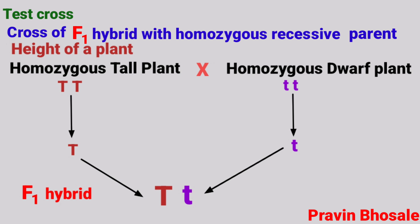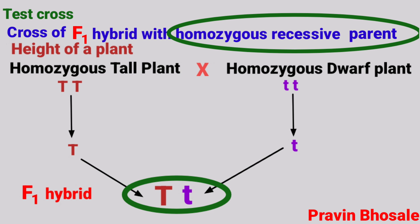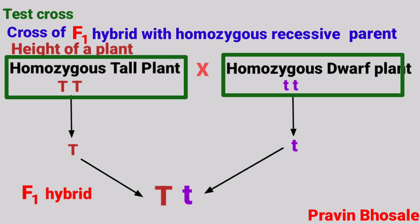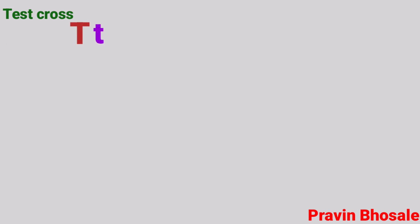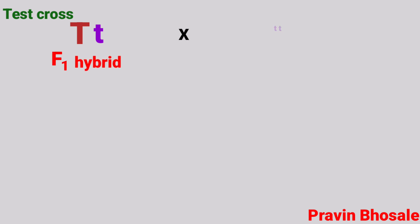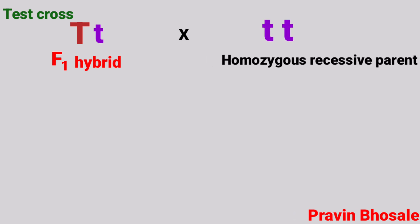As per test cross, this F1 hybrid is crossed with the homozygous recessive parent. In these two cases — homozygous tall plant and homozygous dwarf plant — the homozygous recessive parent is small t, small t. Now we have the content for test cross: capital T, small t crossed with small t, small t. Capital T, small t is the F1 hybrid; small t, small t is the homozygous recessive parent with reference to height.